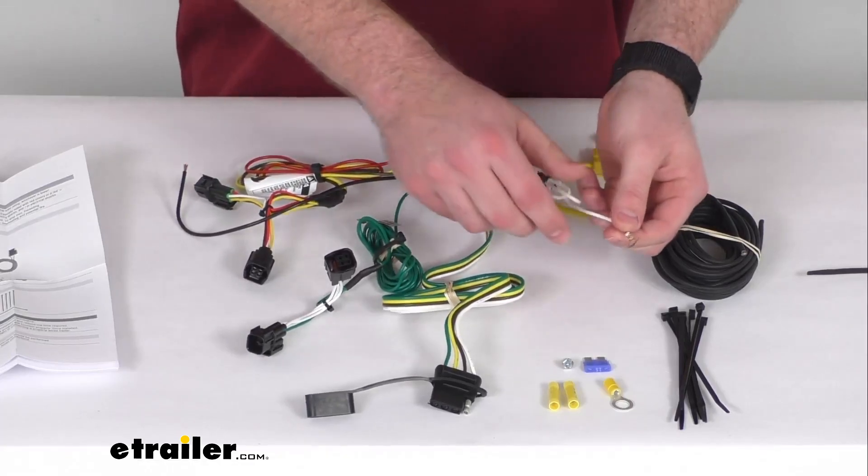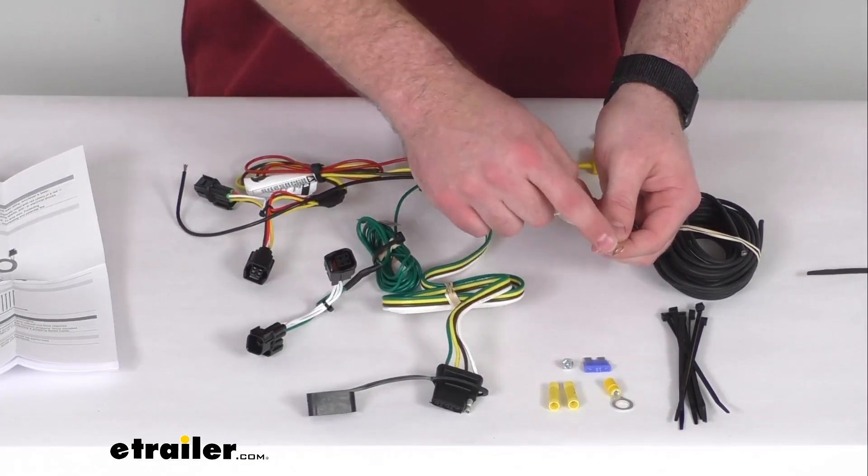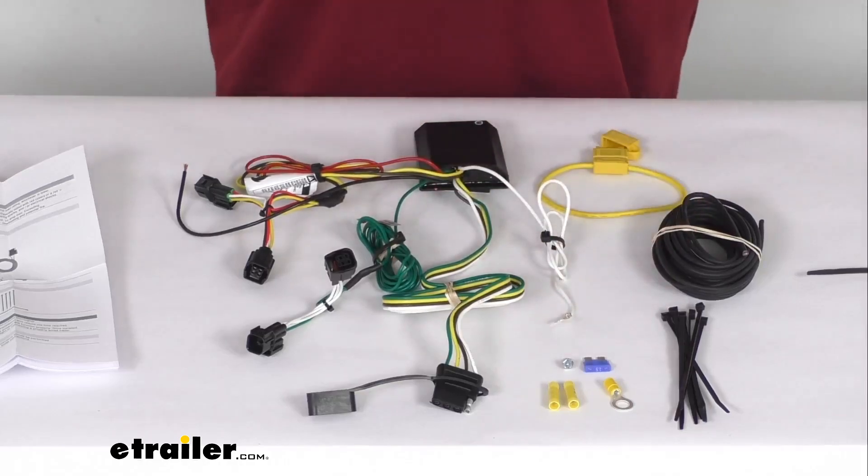You've got a white ground wire. They do include a self-tapping screw so that you can get that grounded to a metal surface.